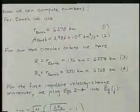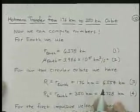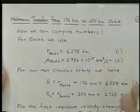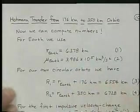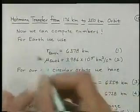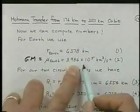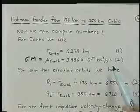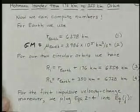Now we can compute some numbers. In the Hohmann transfer, going from 176 kilometers to 350 kilometer circular orbit, we'll use as the Earth radius 6378 kilometers, the GM of the Earth, which is mu, of 3.986 times 10 to the 5th kilometers cubed per second squared.